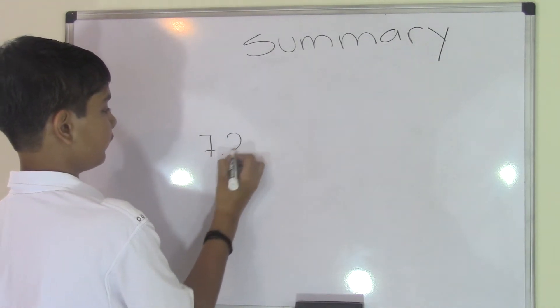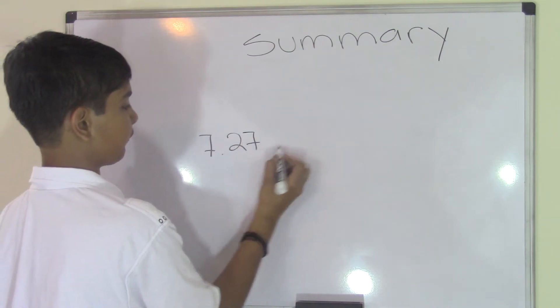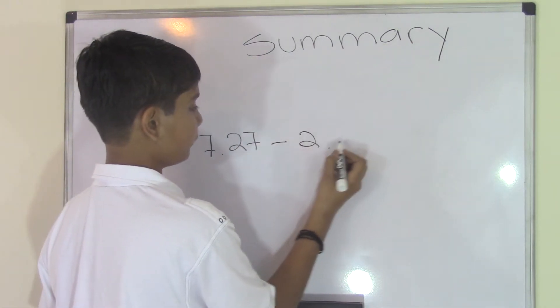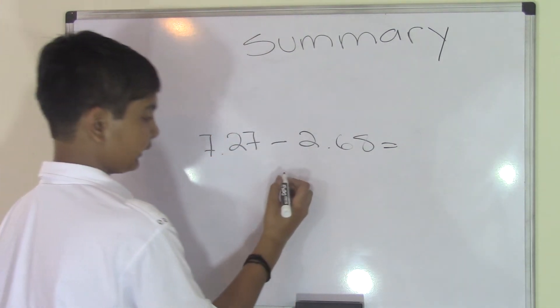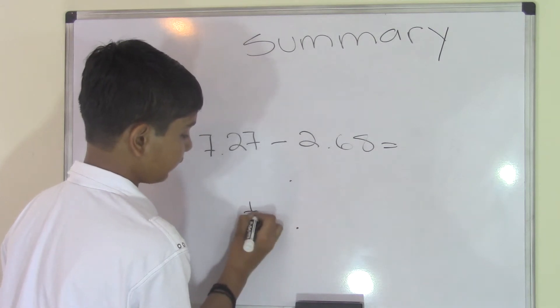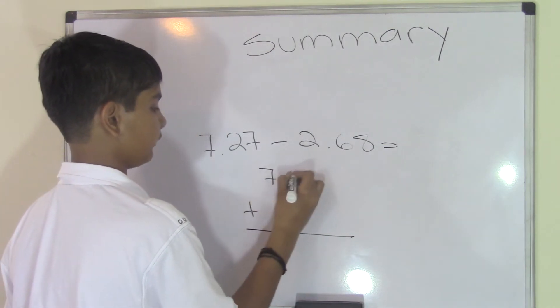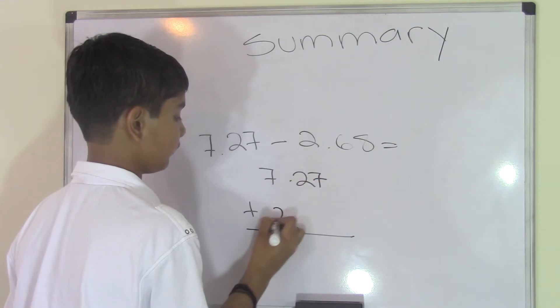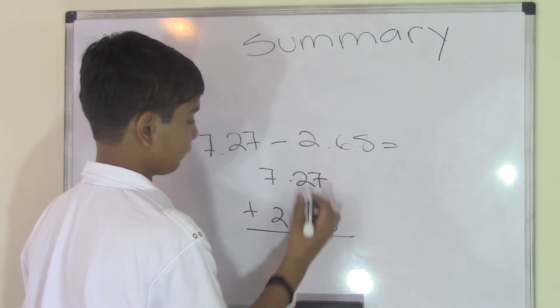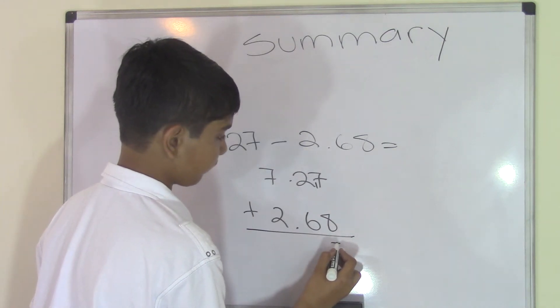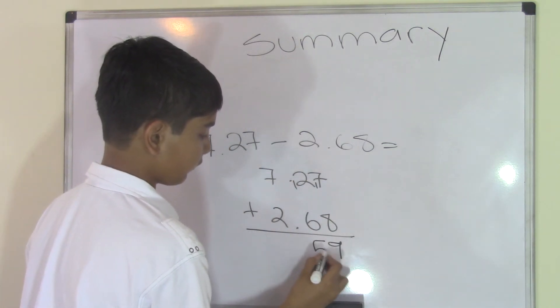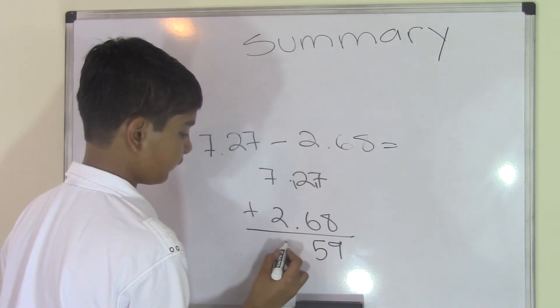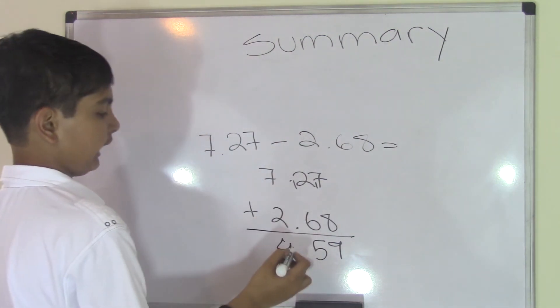For example, we get a problem like 7.27 minus 2.68. To do this, remember to align the decimal points vertically, add the subtraction sign, put in the numbers, and go ahead and subtract that. Then you just have to bring the decimal point straight down, and the answer is 4.59.